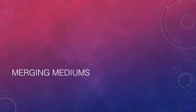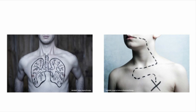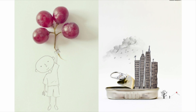Then there's this style of merging mediums, where you're seeing a photo but starting to see artistic elements from another medium mixed together — kind of similar to the sketchbook style from earlier. Here's like lungs and an x-ray. Here's a kid holding balloons that are actually grapes. And a sardine can with a city in it — representing how we're all stuffed into apartments in urban areas.